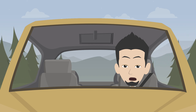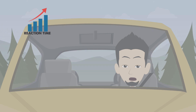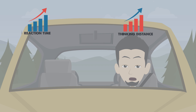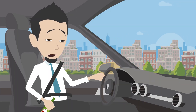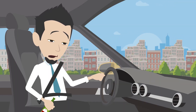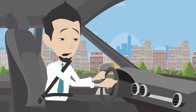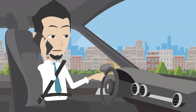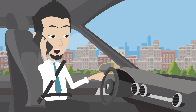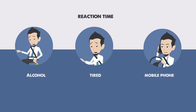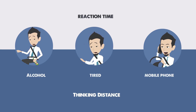So anything that will increase the reaction time will increase the thinking distance. The best examples are if the driver has drunk alcohol, if they are tired, and distractions such as being on a mobile phone. All of these will increase the reaction time and so increase the thinking distance.